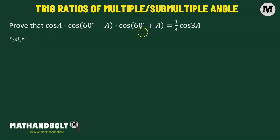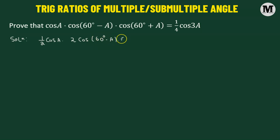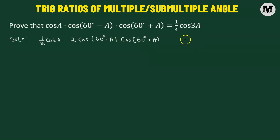What we'll do is multiply the entire expression on the left hand side by 2 and divide by 2, and rewrite it as half times cosine of angle A multiplied by 2 times cosine of (60° minus A) times cosine of (60° plus A). The reason we're doing this is because there is a standard formula to convert a product of two cosine functions into a sum of two cosine functions.